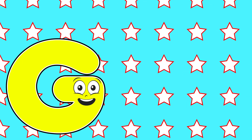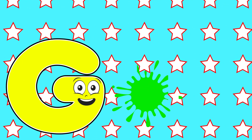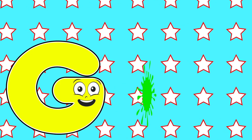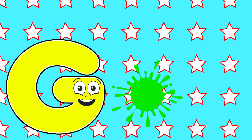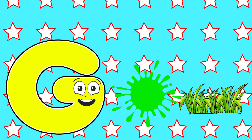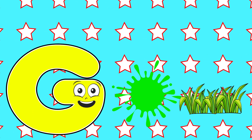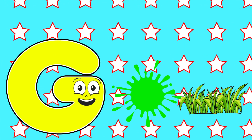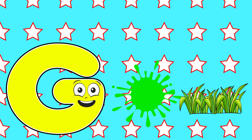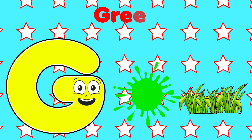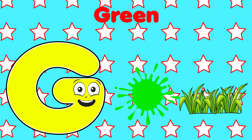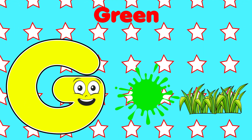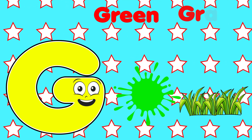G is for Green. G-G-Green. G is for Grass. G-G-Grass. G is for G-G-Green. G is for G-G-Grass.